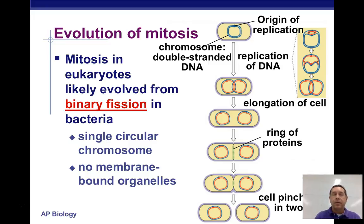With eukaryotes, you have the nucleus, so there are some extra things to deal with when making copies of eukaryotic cells.